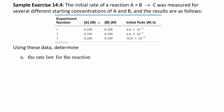Let's try another one of these problems where they give you different concentrations and then you measure the rate. Looking at these, some concentrations are staying the same and others are changing. Right away, you can eyeball this and see that when one concentration stays the same and this one doubles, nothing happens to the rate. So I already know that B is going to be zero-order — I can double, triple, or quadruple that concentration and it won't affect the rate.